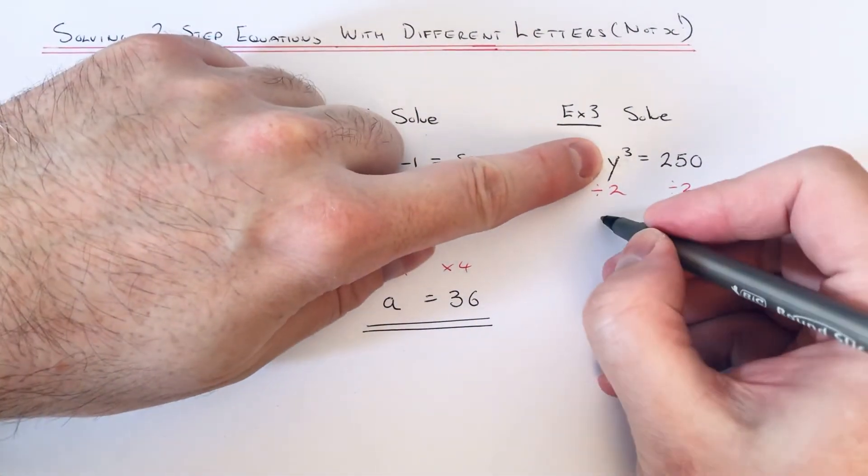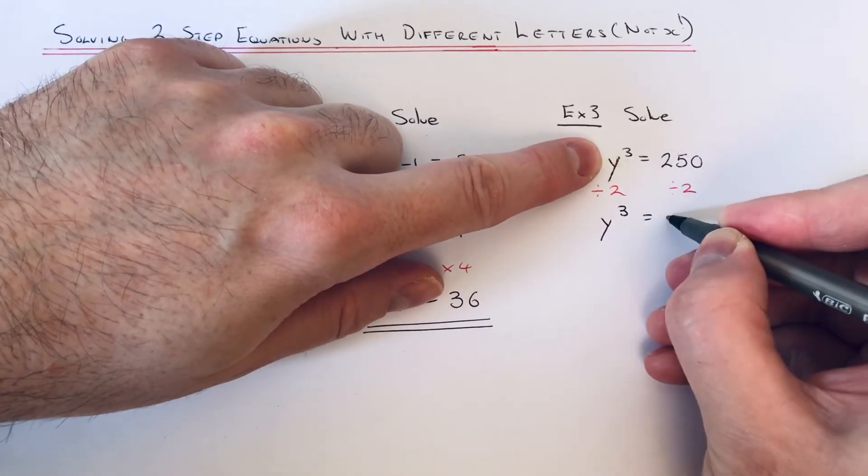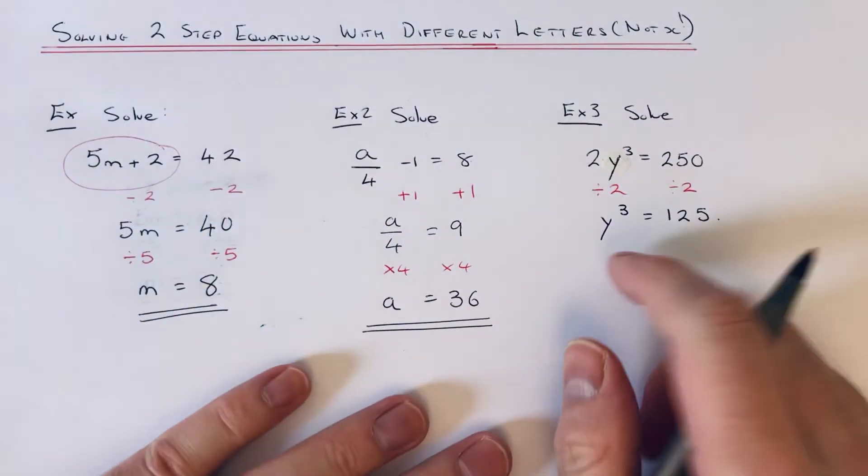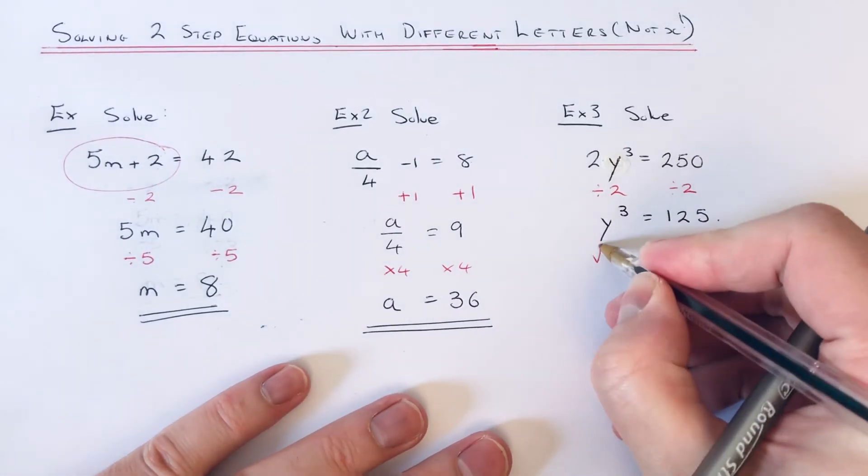So that will get rid of that and leave us with y cubed. So 250 divided by 2, just half of it, is 125. And then the opposite operation to a cube is a cube root.